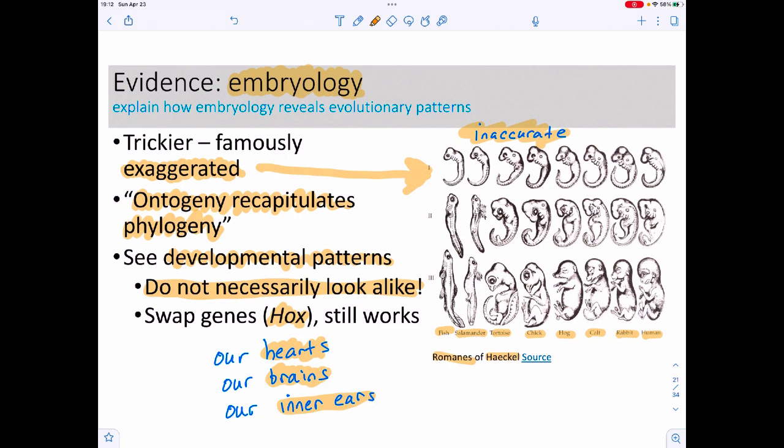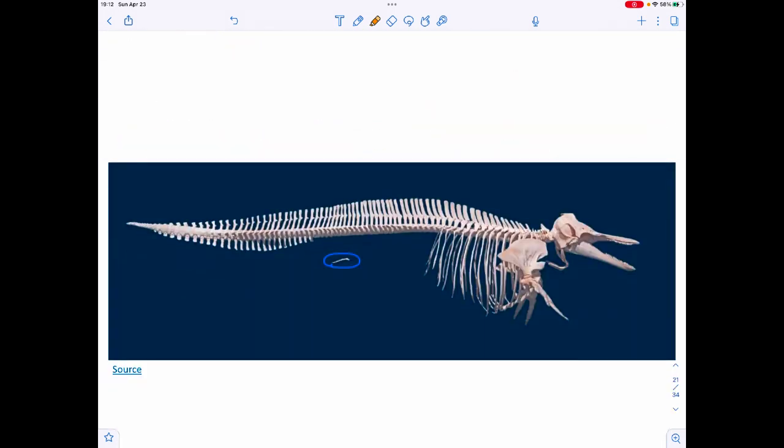We also get some weird structures. For this particular whale—I don't remember what type of whale this is—if you look right here there's this weird little thing that's sticking out, a hip and a femur. Why does this aquatic mammal, which by the way has one bone, two bones, a whole bunch of bones, have this weird little hip and femur thing when clearly they don't have feet and legs? It's a leftover from their evolutionary past.